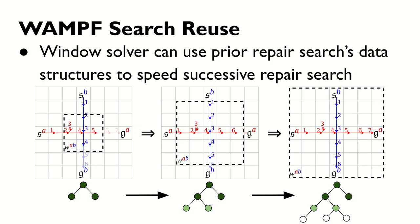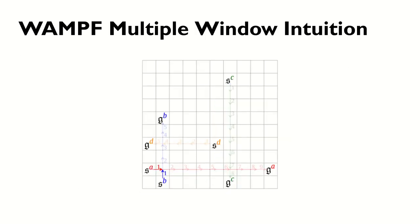The single window intuition for WAMPF is fairly straightforward, but it gets more complicated when there are multiple collisions. In this scenario, there is a collision between agents A and B. To solve this, we generate a repair window, but this creates a downstream collision between agent A and agent C. This can be resolved with a second repair window, and WAMPF has now generated a valid path.